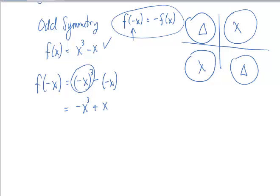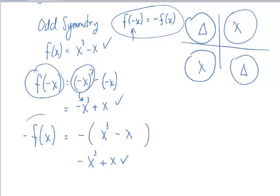Because remember, negative x times negative x is negative x cubed. And now, let me check out what negative f of x is. I'll put a negative out in front of the function of x cubed minus x. And I'll end up getting negative x cubed plus x, which does in fact equal what f of negative x was. Since these two are equal, then it's an odd function.